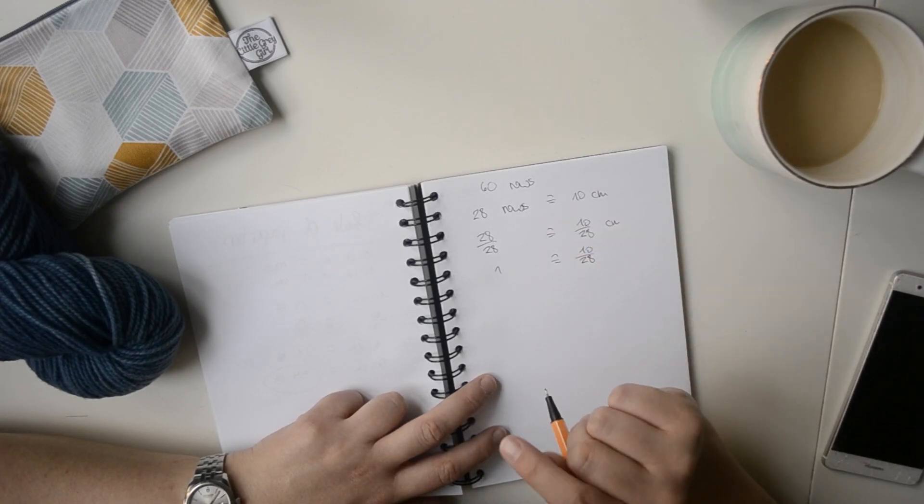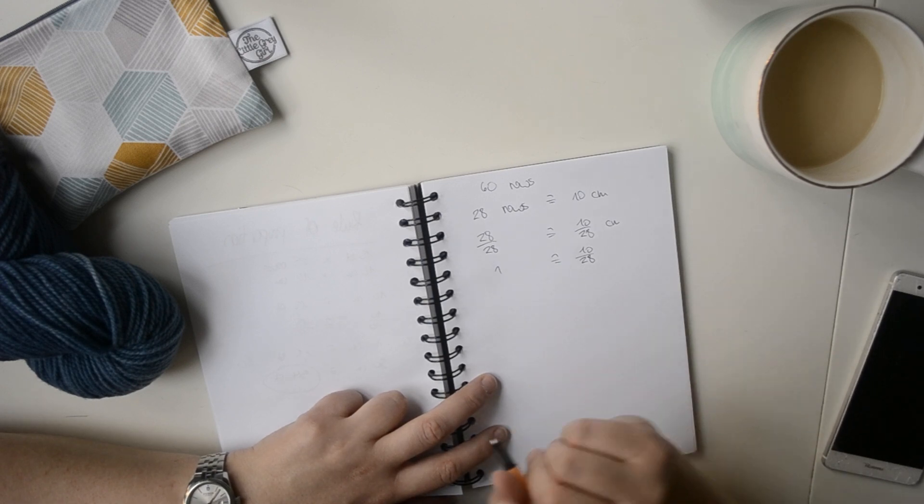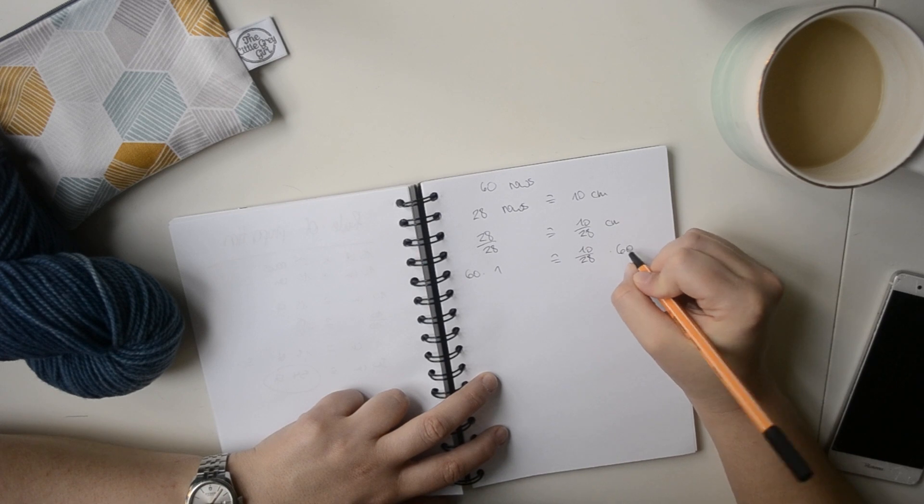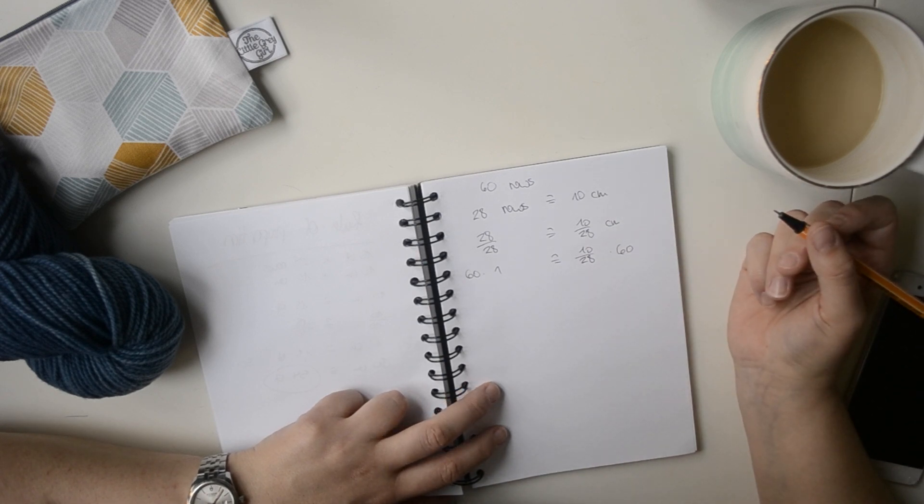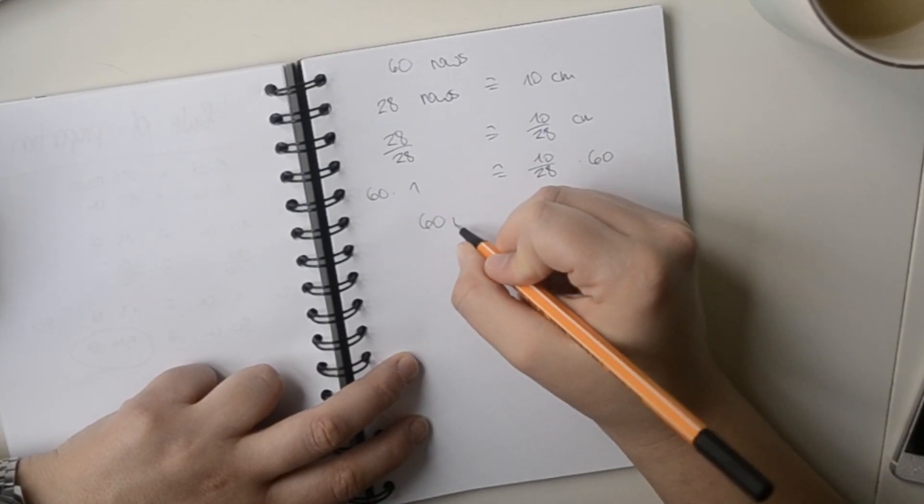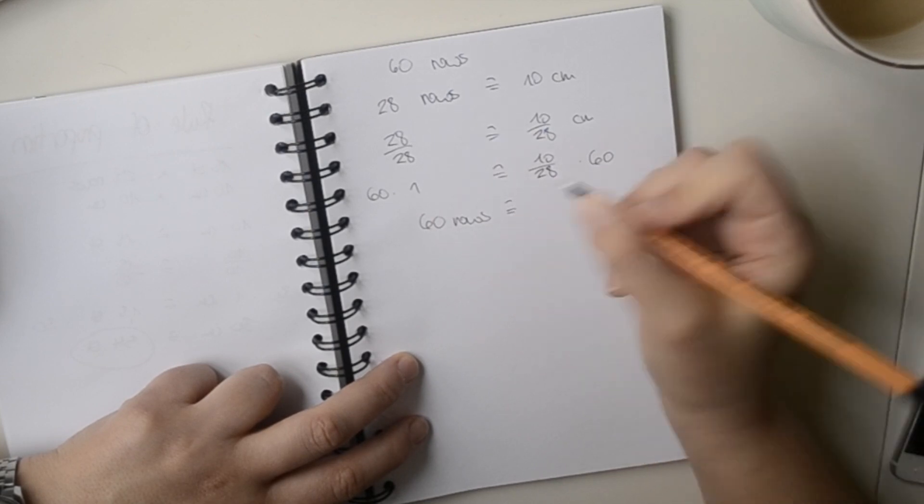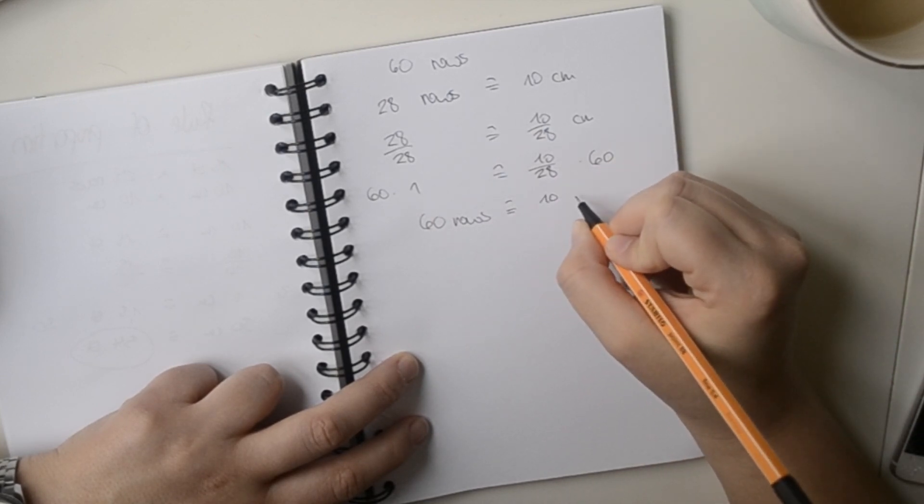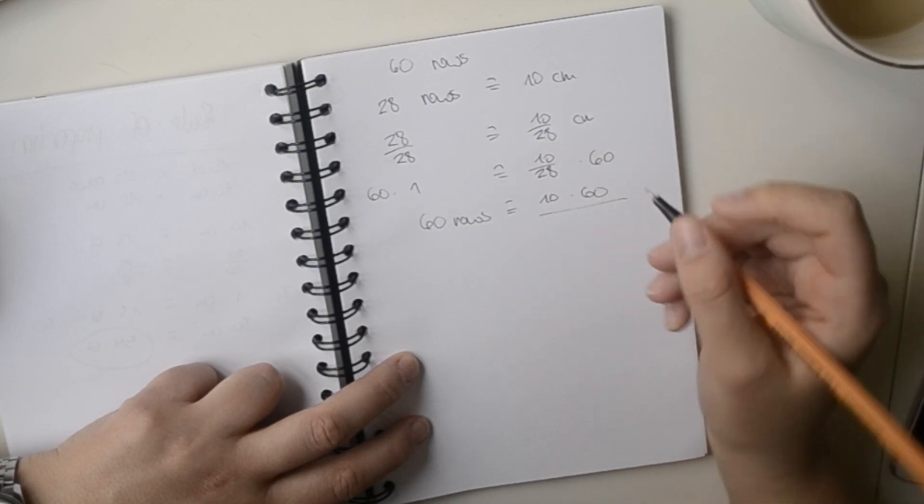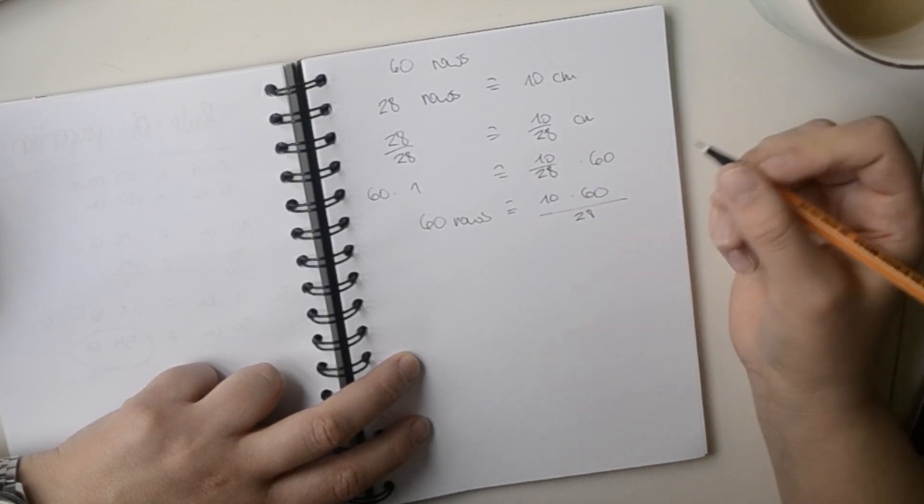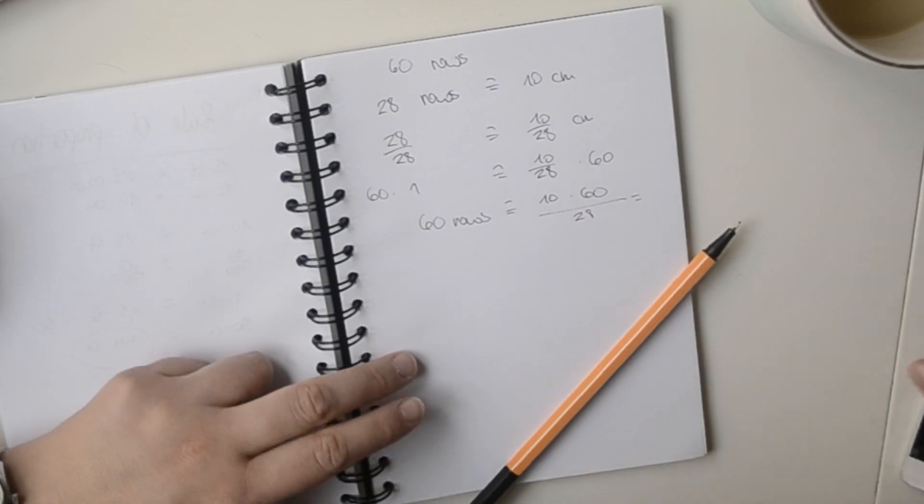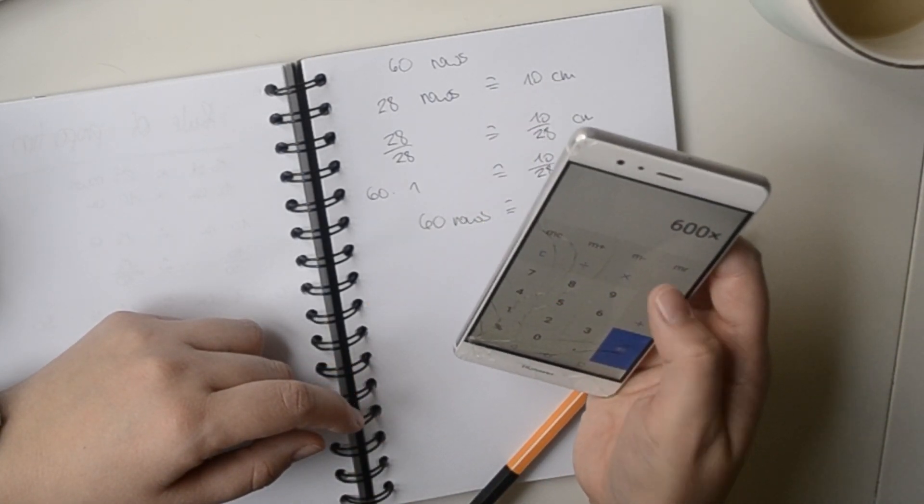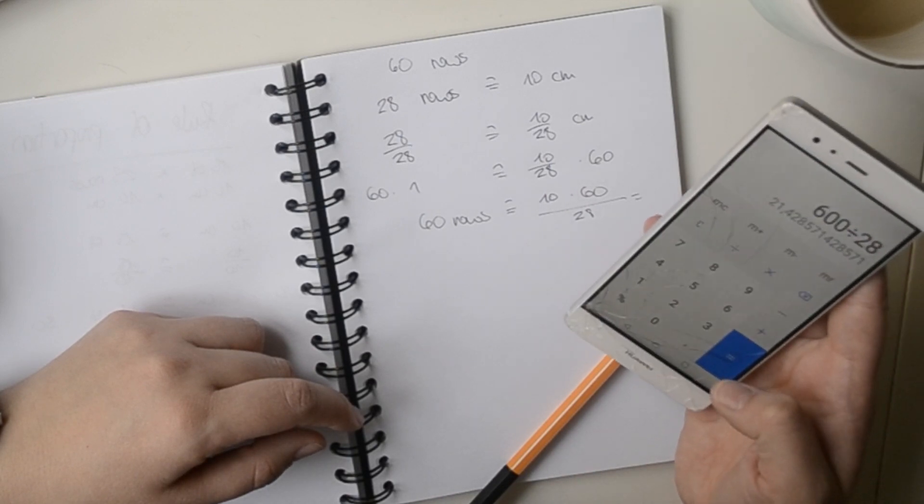And then I said I want to know how many cm are 60 rows. So I can multiply the whole thing by 60. And then I know that 60 rows is equal to 10 times 60 divided by 28, which is 600 divided by 28.